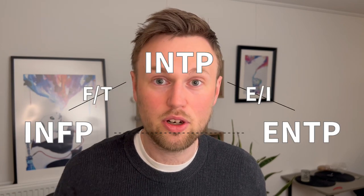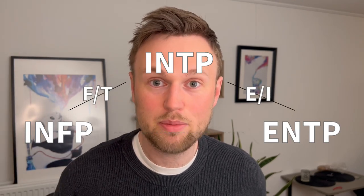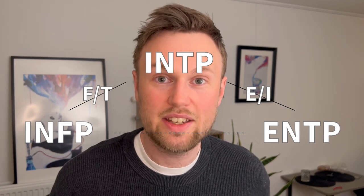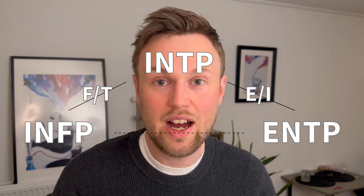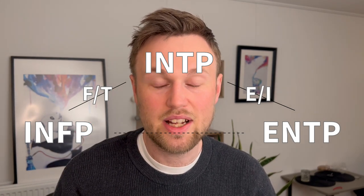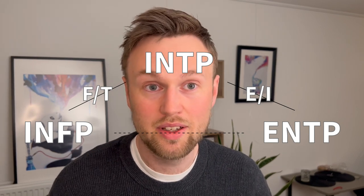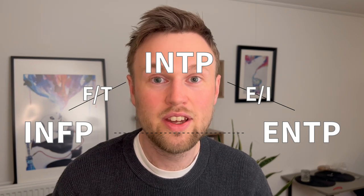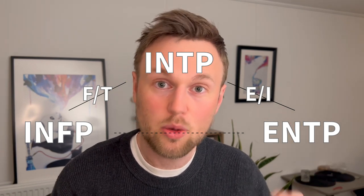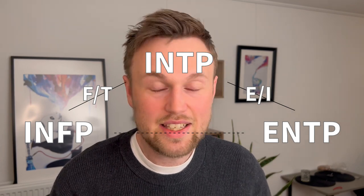After thinking about these, draw a triangle. Imagine that the INTP shares a strong connection to the INFP and ENTP personality types. Draw two straight lines — one between the INFP and the INTP, and one between the INTP and the ENTP. Then draw a dashed line between the INFP and ENTP, as these two don't share as much in common. In the middle of this triangle, write down the two letters that all three types have in common.